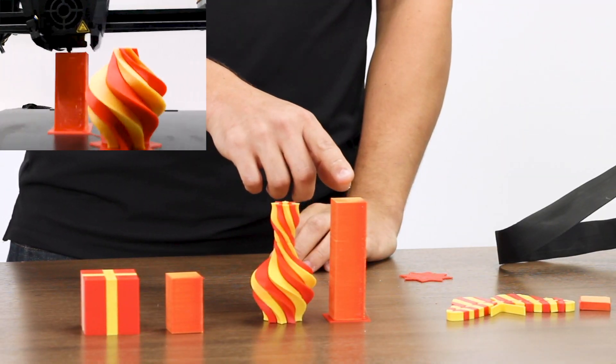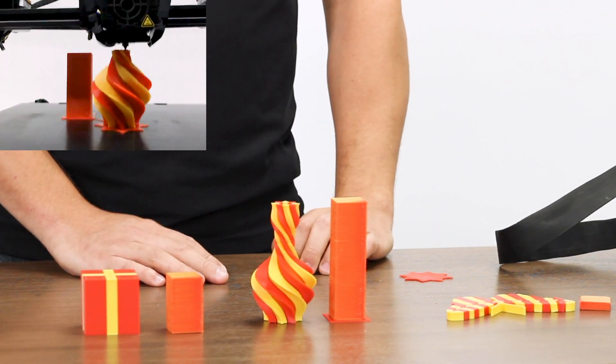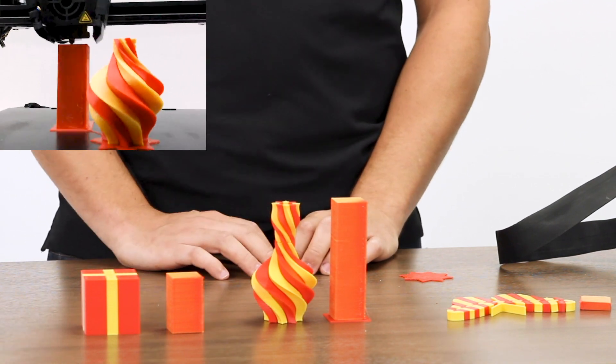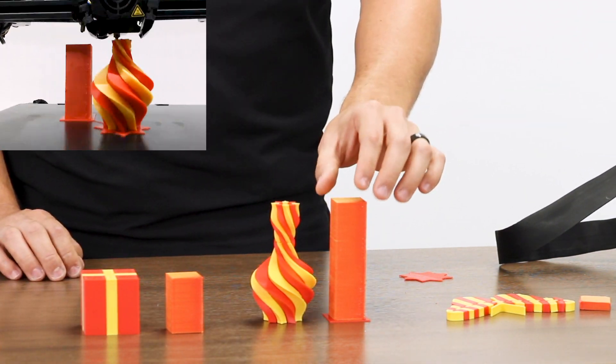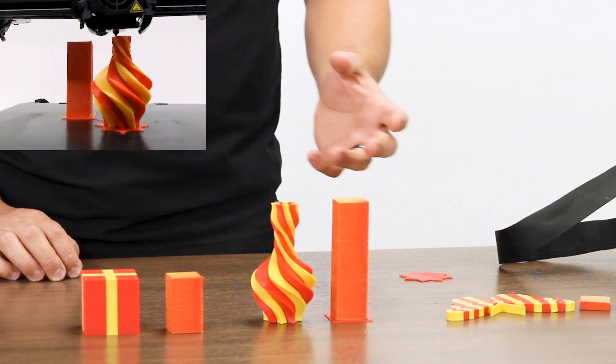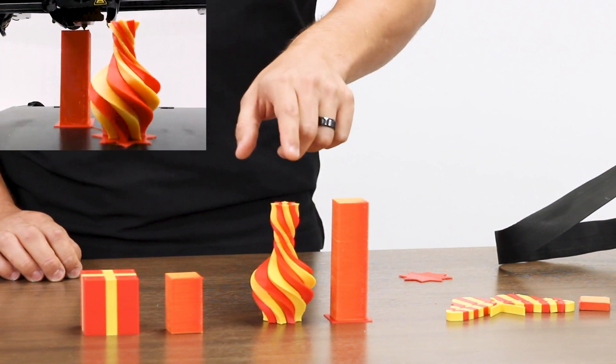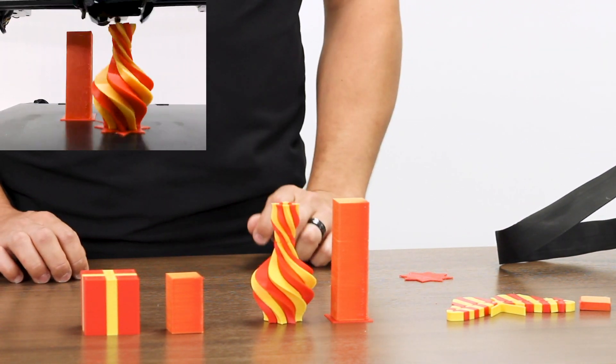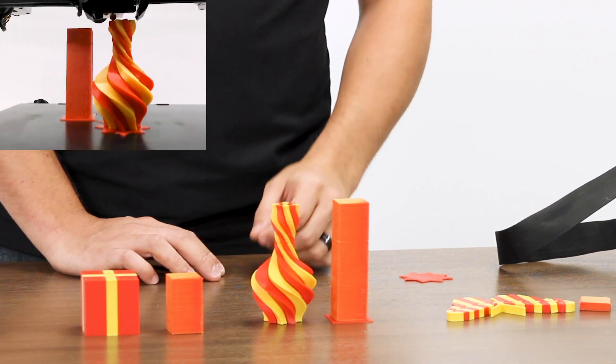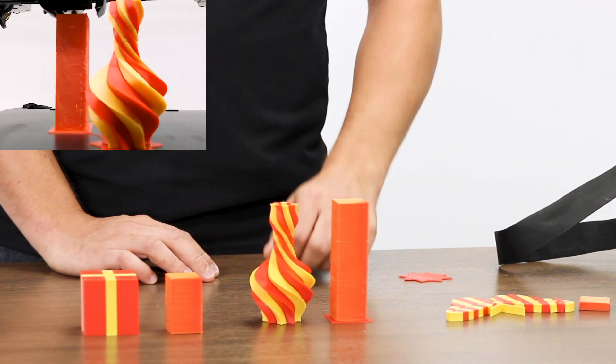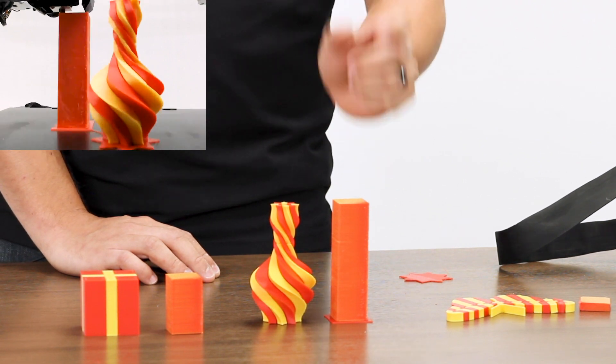I could tune the purge amount per layer if I was slicing this myself. This was Creality's provided slices, but I could tune this a bit to hopefully cut down on the waste. But you always run the risk, especially when going from the red to the yellow, that you haven't purged out all of the red when you're switching to yellow if you shrink this at all.